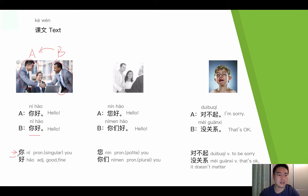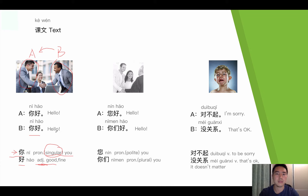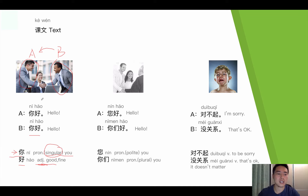你 here is a pronoun meaning 'you' — specifically the singular form. And 好 here is an adjective meaning 'good' or 'fine'. So 你好 literally means 'wish you good.' This word happens at the beginning of a conversation, corresponding to 'hello' in English. So A says 你好, and the reply is also 你好.